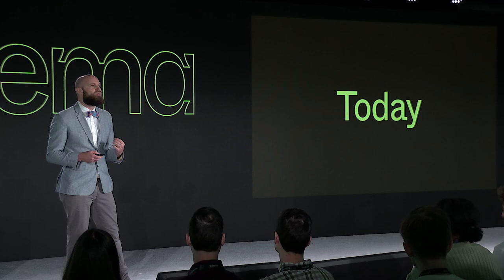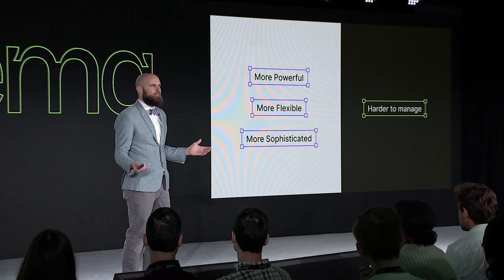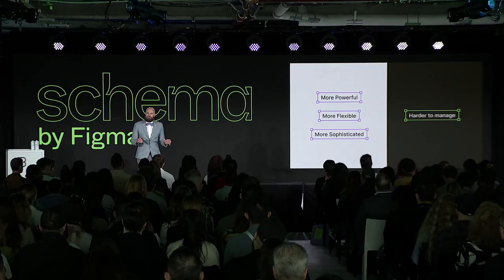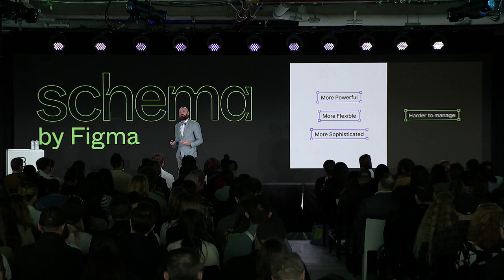Now I want to talk about what design systems really look like now and what we're going to see in the future. Design systems today are more powerful, more flexible, and more sophisticated than they ever have been. But the other side of that is that they're also harder to maintain. I want to highlight three particular areas where we are seeing design complexity increase and the ways that we at Figma are actually thinking about how to address those.